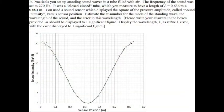First, let's carefully read through the question. In practicals, you set up standing sound waves in a tube filled with air. The frequency of the sound was set to 270 Hz. It was a closed-closed tube, which you measured to have a length of L equals 0.636 meters plus or minus 0.004.